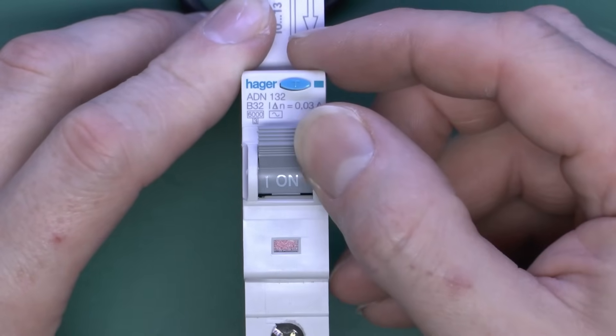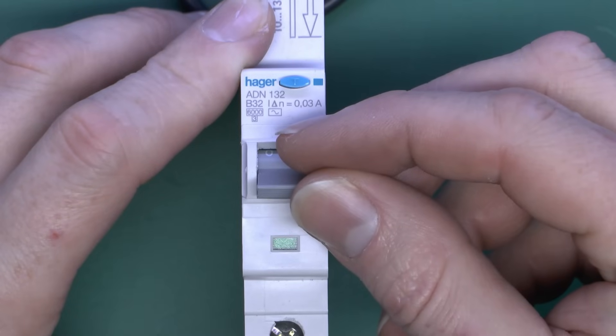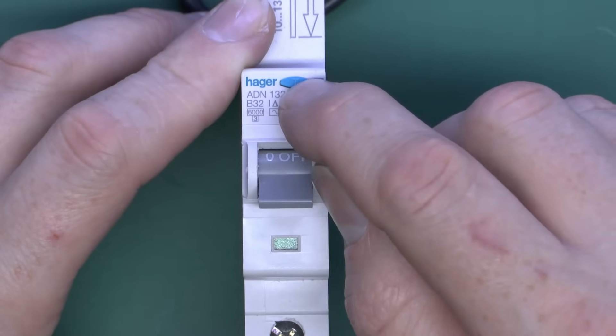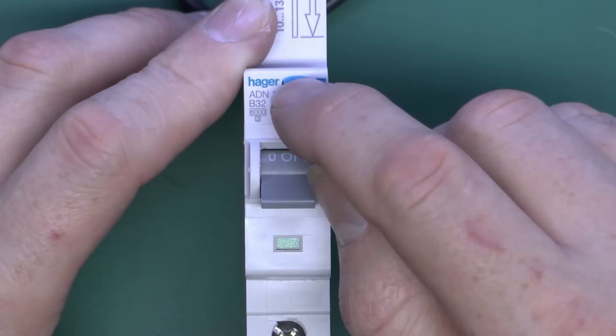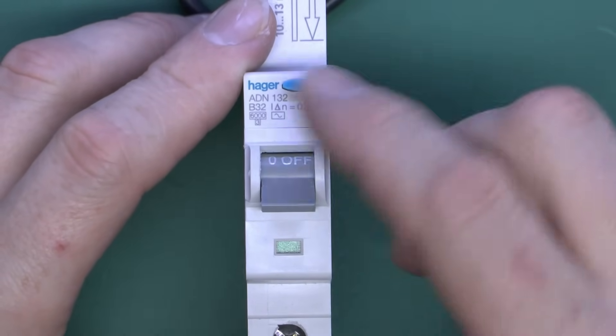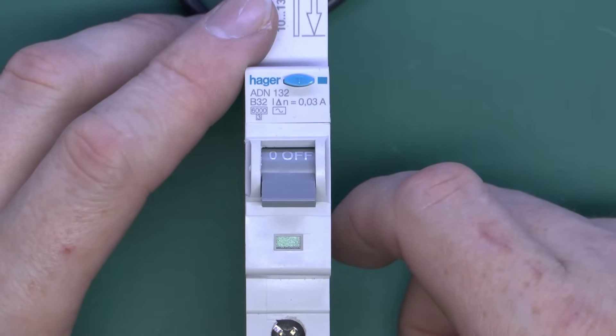And again the lever on the front here to switch on and off, and the little window with the red and green indications, and then the, on this case, incredibly small test button there that only tests the RCD functionality. So in terms of the actual arrangement, it literally is just those two devices combined into a single unit.